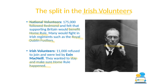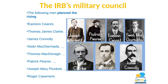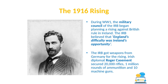These 11,000 included members of the IRB — the Irish Republican Brotherhood — who would go on to organize the 1916 Rising. The IRB had a military council made up of men who said 'England's difficulty is Ireland's opportunity.' While England was preoccupied with World War One, they planned a rising against British rule in Dublin. The military council included Éamonn Ceannt, Thomas Clarke, James Connolly, Seán McDermott, Thomas MacDonagh, Patrick Pearse, Joseph Mary Plunkett, and Roger Casement.